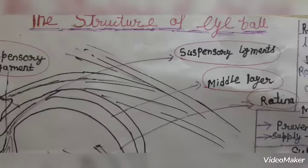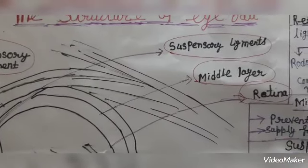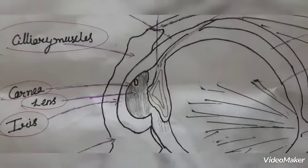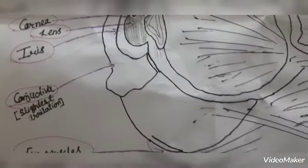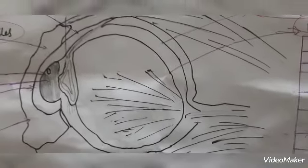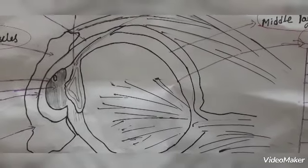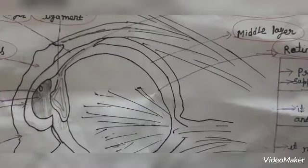So this is the structure of eyeball. It is very clear and very easy to understand. I just made here a rough diagram of eyeball. You should note this in your copy, and in the next class we will see the next topic. Till then, bye bye.